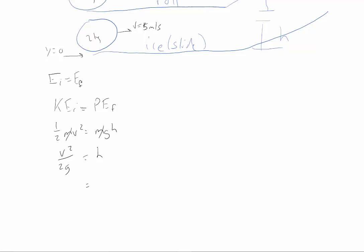Or in this case, it's going to be 25 m squared per second squared divided by 20. So we're going to get something like 1.2, 1.3 meters. All right, that's for the sliding one.